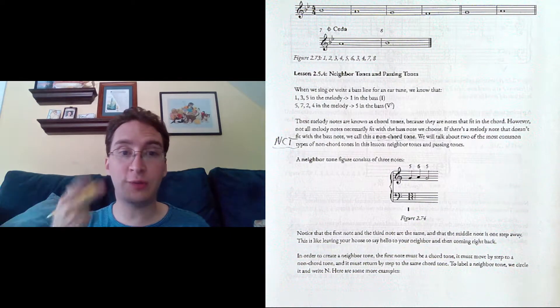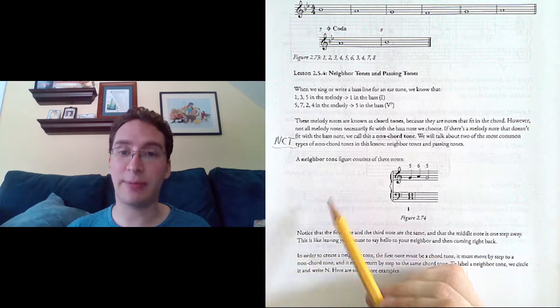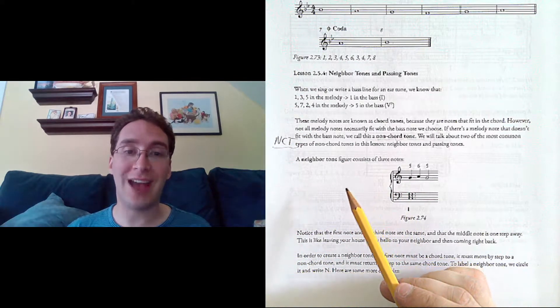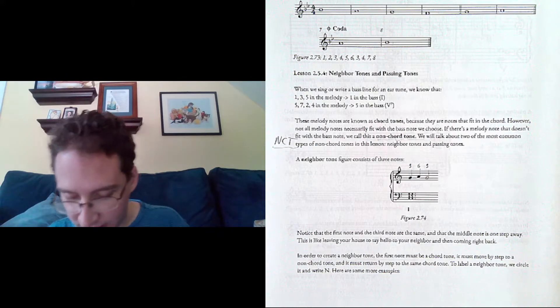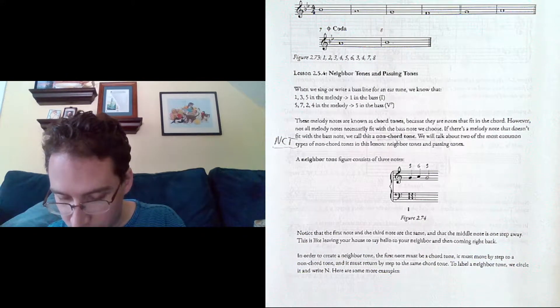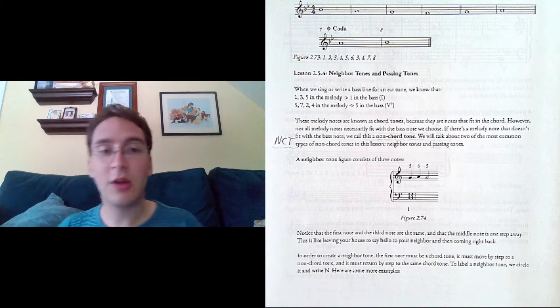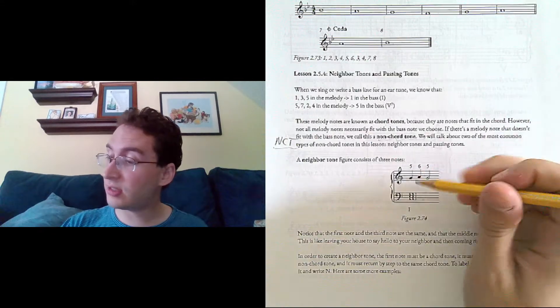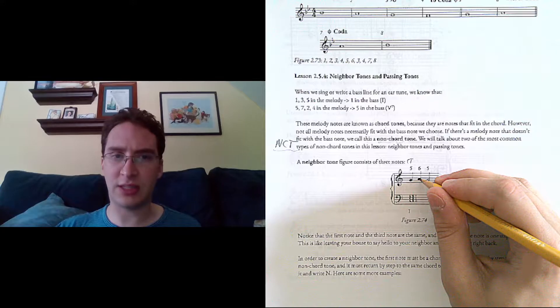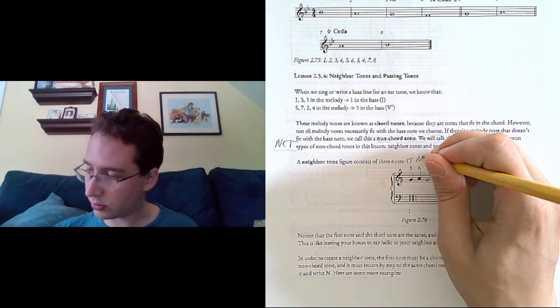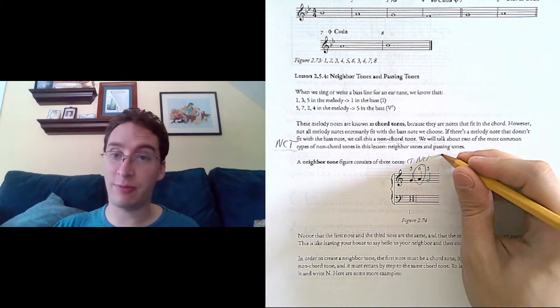So there are two specific types of non-chord tones we're going to take a look at today. The first is a neighbor tone, and a neighbor tone figure has to consist of three notes. So, this is what one sounds like. So what's going on there? We start on scale degree 5, which is a chord tone. We move by step to scale degree 6, which is not a chord tone. And then we go back to scale degree 5, which is a chord tone.